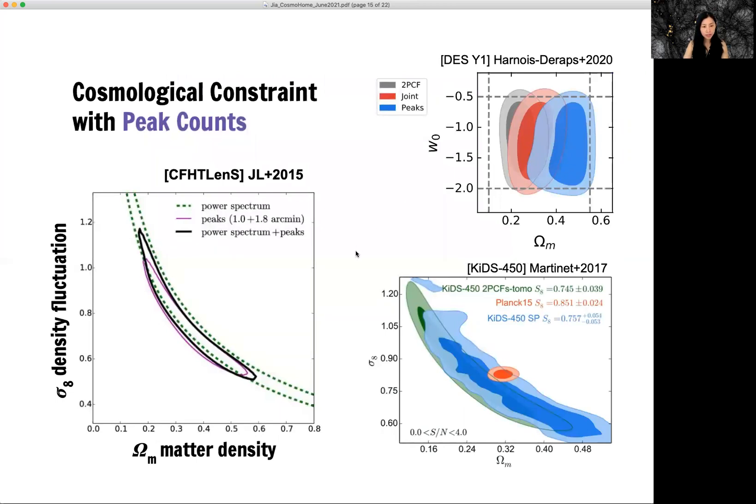So peak counts has been applied to many different weaklensing surveys, including CFHE lens and DES and the KIT survey and many others. So in all the works independent done by different groups,